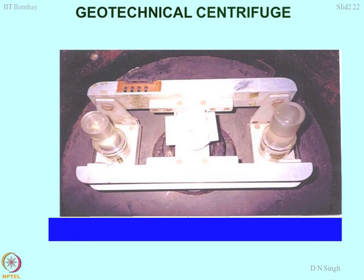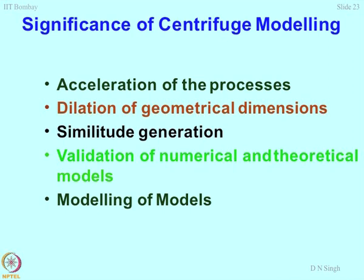This is the geotechnical centrifuge, now being used by many researchers, where we can have two buckets, keep samples on both sides as a counterbalance, and simulate mechanisms. The idea of this type of modeling is to accelerate physical processes. Lot of people say diffusion cannot be modeled in centrifuge because diffusion is a chemical process. But our research group has shown that diffusion can also be modeled. Up to 2002–2003, people believed diffusion could not be modeled, but our papers showed it can be modeled very easily in centrifuge — making it advective-diffusive contaminant transport using centrifuge modeling.